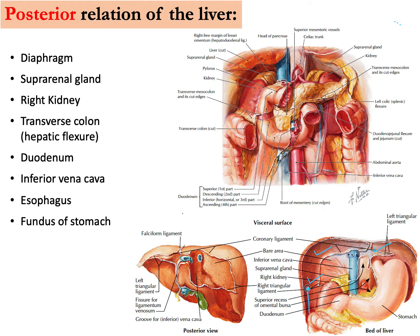Other than the diaphragm, posteriorly we have the right kidney and the right suprarenal gland. We also have the hepatic flexure — also known as the right colic flexure, because it is related to the liver — and a little bit of the transverse colon as well. Moving further, you will see the first part of the duodenum and the fundus of the stomach.